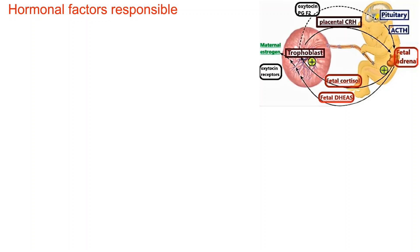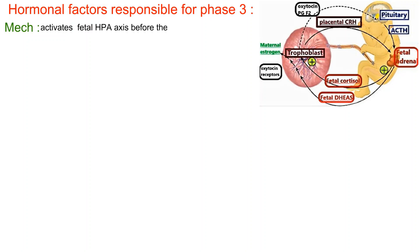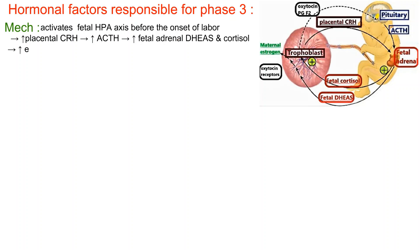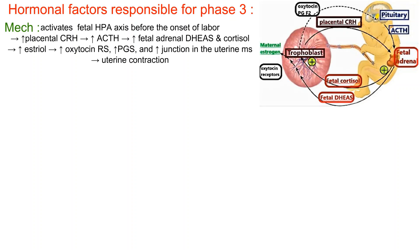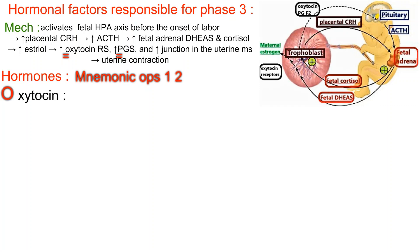Hormonal factors responsible for phase 3: a cascade of events activates the fetal hypothalamic-pituitary-adrenal axis before labor onset. Increased placental CRH causes increases in ACTH, stimulating the fetal adrenal to release DHEA-S and cortisol, which accelerates estriol production. This increases expression of oxytocin receptors, increases prostaglandins, and promotes gap junctions in uterine muscle — stimulating uterine contractions. Hormones mnemonic: OPS 1-2.